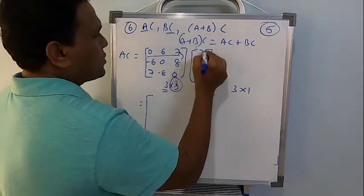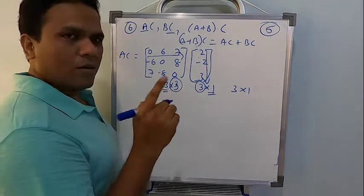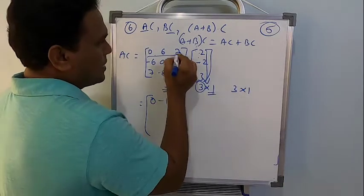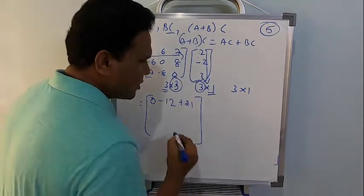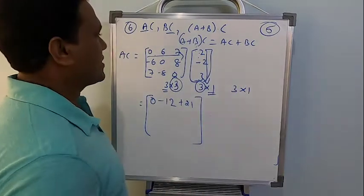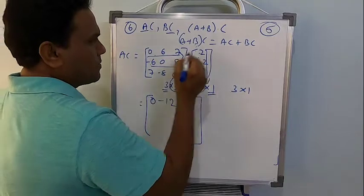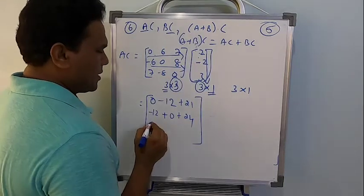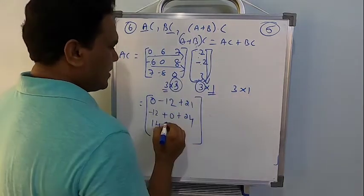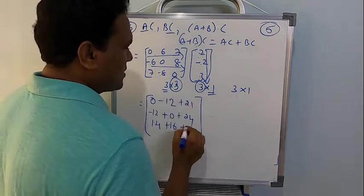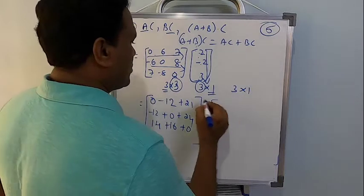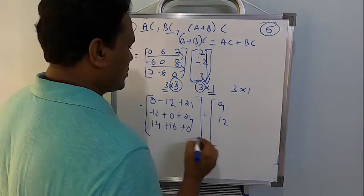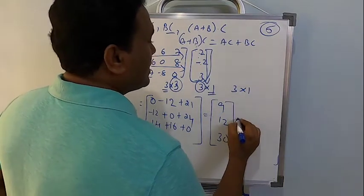So let us continue. First row, only one column: 0 multiplied by 2 is 0, 6 multiplied by minus 2 is minus 12, 7 multiplied by 3 is 21. There is no other column to continue with for the first row. Second row, first column: minus 6 multiplied by 2 is minus 12, plus 0, plus 24. Third row: 7 multiplied by 2 is 14, next is 16, and 0 plus 3 is 0. What you got for AC: it is going to be 8 plus 1 is 9; here it is 12; the last is going to be 20 and 30. This is matrix AC.